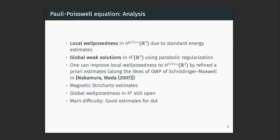For the analysis: you can get local well-posedness in sufficient regularity using energy estimates. Here you get a Sobolev exponent of five-halves plus epsilon, due to Sobolev embedding — in the magnetic Laplacian you have A times grad u, and to estimate this you need this high Sobolev embedding. You can also establish weak solutions globally in H¹ using parabolic regularization, where you add a dissipative term and pass to the limit. This was done by Nakamitsu and Strauss for the Maxwell-Schrödinger system, and you can adapt it to this case.